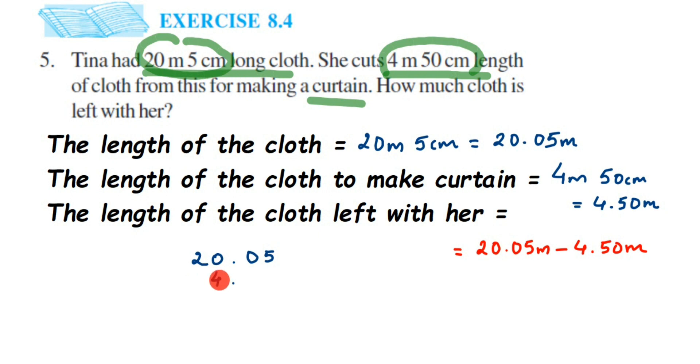If you write 4 here, there will be a blank space, it will become 40 point, whereas we have 4 point. So always start from nearest to decimal. After the decimal I have 5, 0, so I'm going to start placing from nearest to decimal. 5 will come here and then 0 will come here.